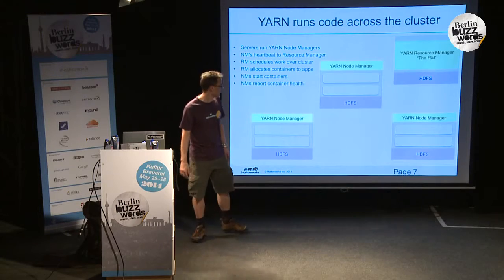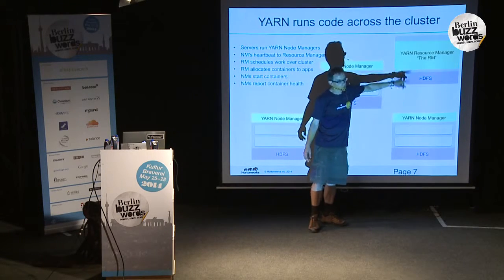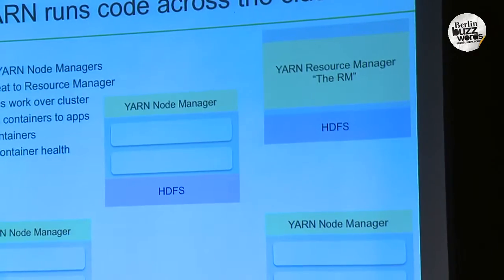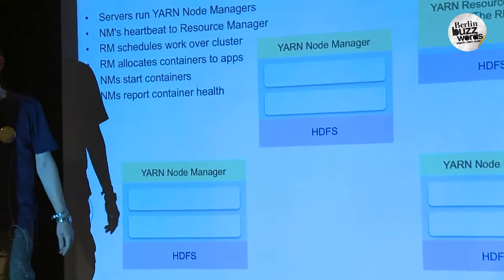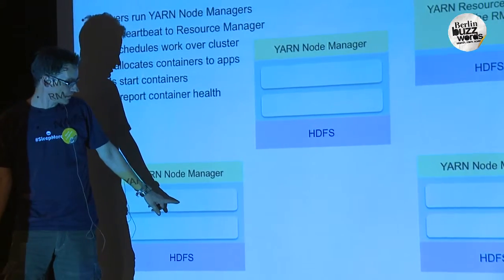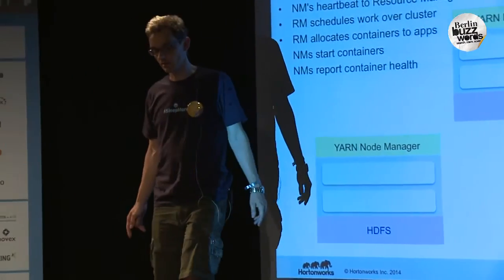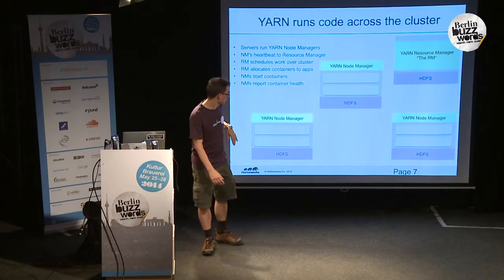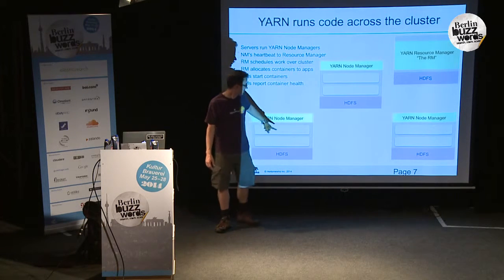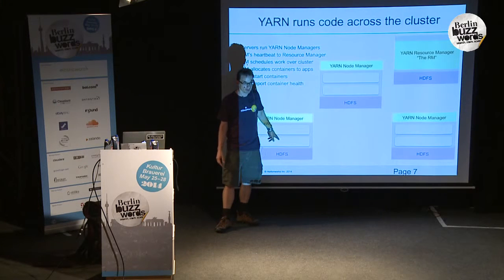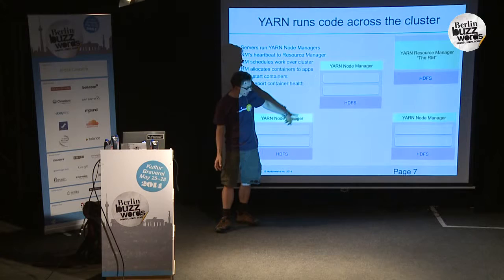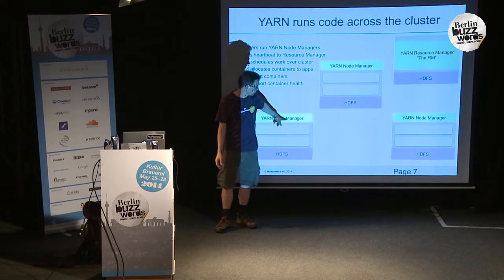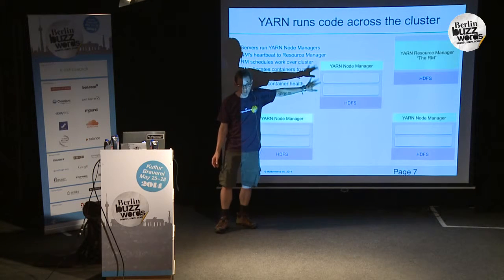YARN runs the code across the cluster. Somewhere in there there's a resource manager — one of them, or now two with HA. On each machine in your cluster there's something called a node manager. It talks to the resource manager, says it's there, and manages these things called containers. A container is currently a cgroup-managed execution process tree of code that you're running — we're also playing with Docker. The resource manager decides what's going to run where, tells node managers, and they run it.